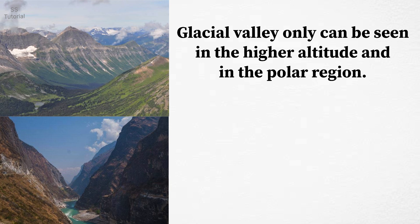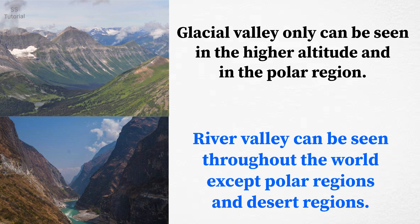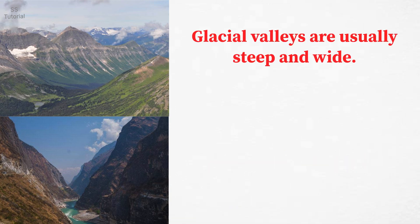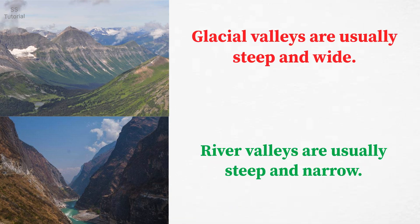Glacial valleys can only be seen at higher altitudes and in polar regions, whereas river valleys can be seen throughout the world, except in polar and desert regions. Glacial valleys are steep and wide, whereas river valleys are steep and narrow.